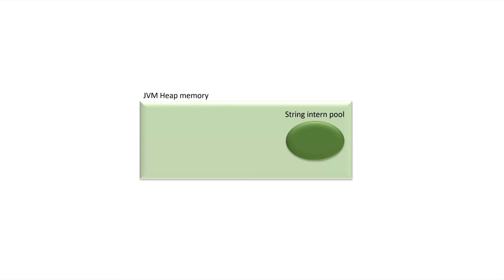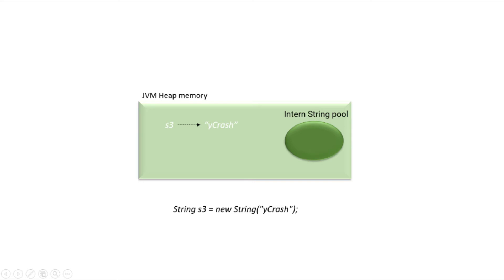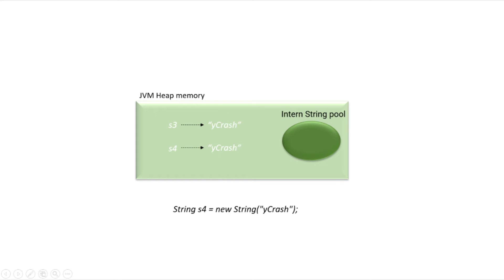Let's see what happens behind the scenes. The JVM has the heap memory, it's a clean slate, my program is just coming up, it has the intern pool and it doesn't have any objects in it. When the very first statement is executed — s3 is a new String 'ycrash' — this 'ycrash' string is stored in heap memory, it's not going to be stored within the intern pool, it is going to be outside this intern pool.